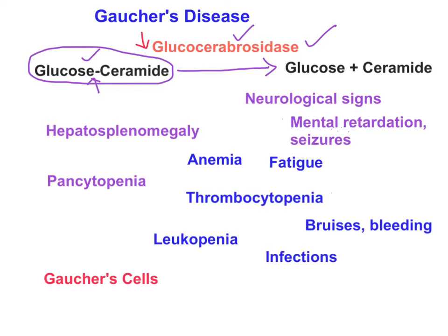The simple job of this enzyme is to break down glucocerebroside into glucose plus ceramide. If there is a mutation in the gene coding for glucocerebrosidase — this is an autosomal recessive condition — there will be decreased activity of glucocerebrosidase. As a result, glucocerebroside accumulates in various cells, since it is part of the cell membrane. It accumulates in the lysosome, making this a lysosomal storage disorder.